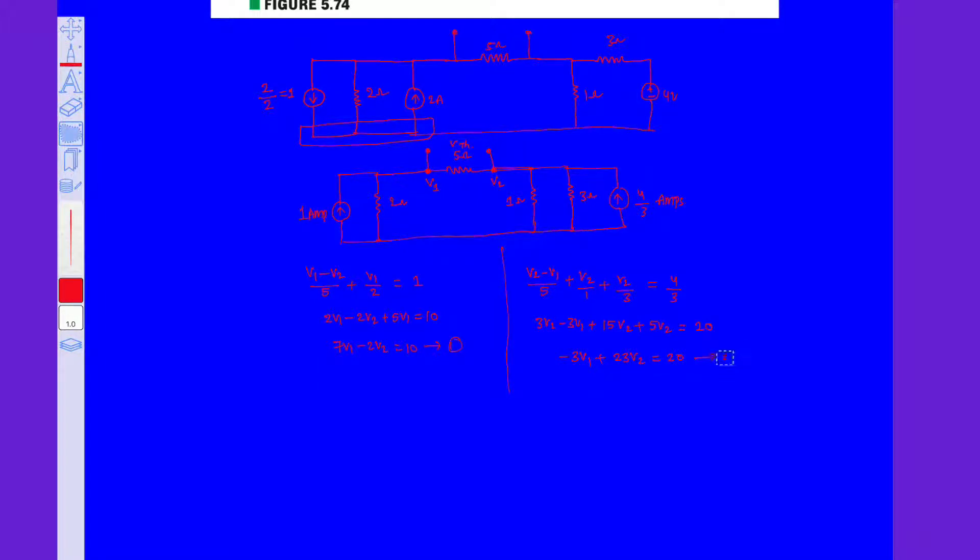By using simple calculator, we can solve this 2 variable simultaneous equations. I am using the Casio FX 991 ES calculator to solve this equation. By solving this, I am getting V1 equals 1.7419 volts and V2 equals 1.0967 volts.